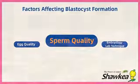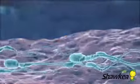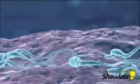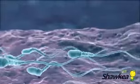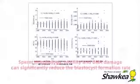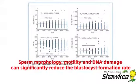Sperm quality: Fertilized eggs develop from sperm and an egg, and the quality of the sperm affects the formation of the blastocyst. The data showed that sperm morphology, motility, and sperm DNA damage significantly reduced blastocyst formation rates.